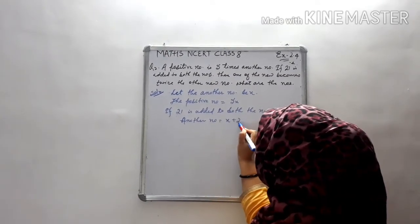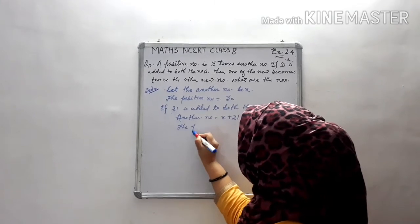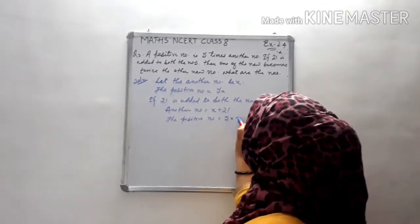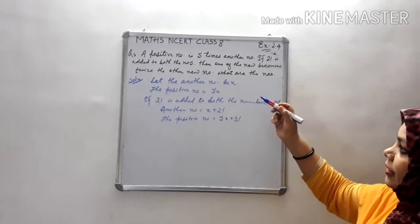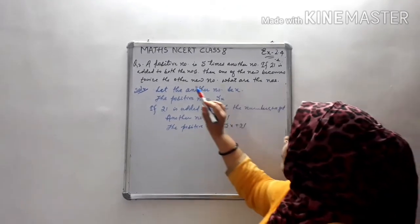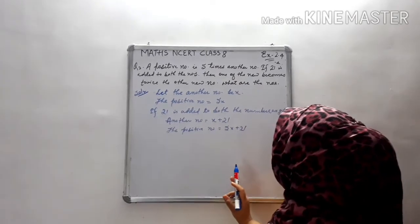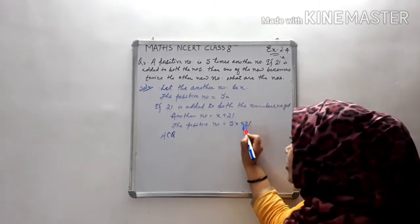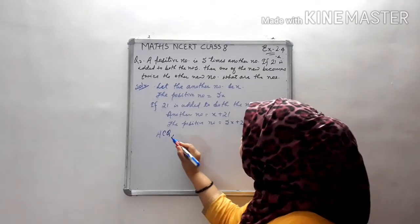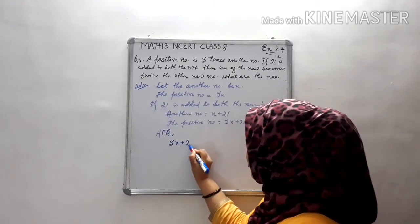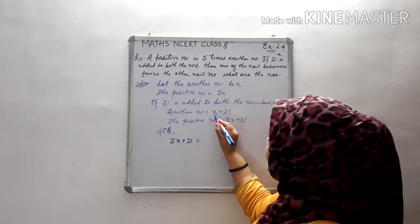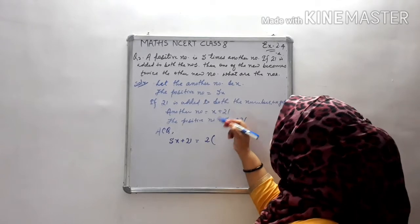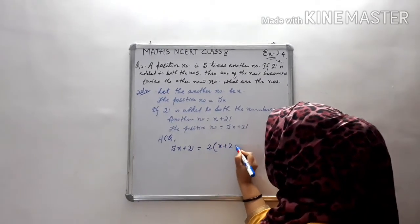Let the other number be x, so x plus 21 is one new number. The positive number is 5x, so the positive number after adding 21 becomes 5x plus 21. As per the condition, one of the new numbers becomes twice the other new number: 5x plus 21 equals 2 times (x plus 21).